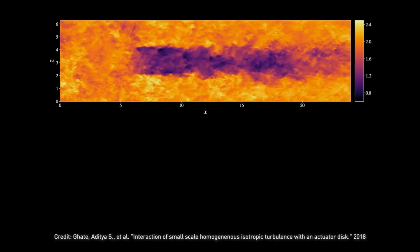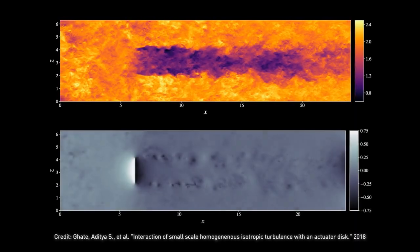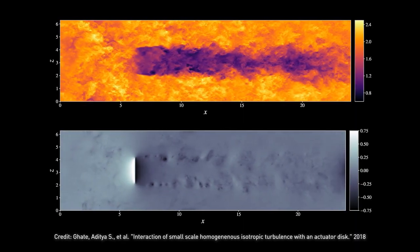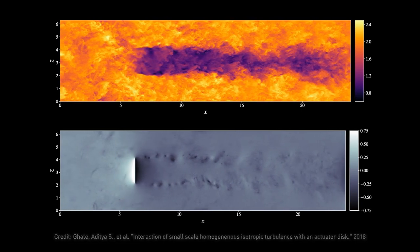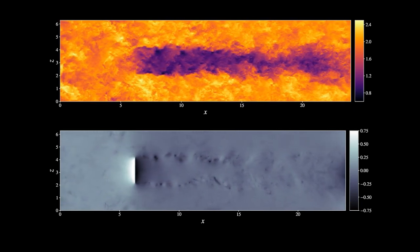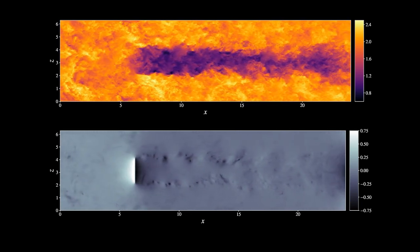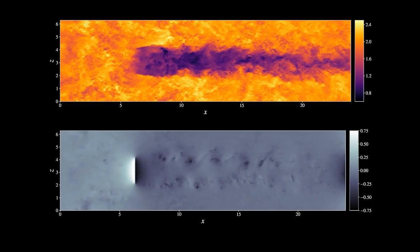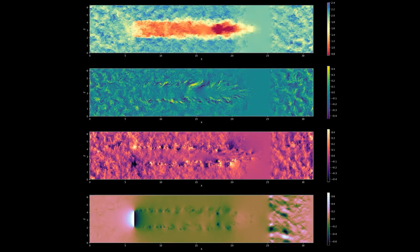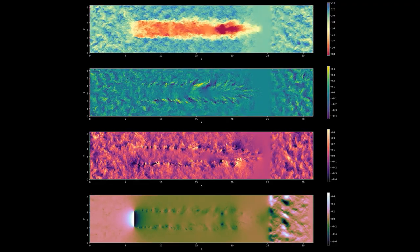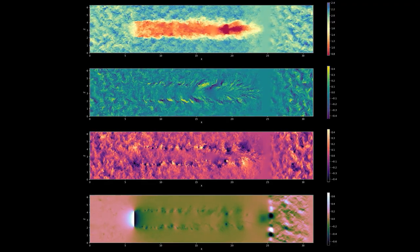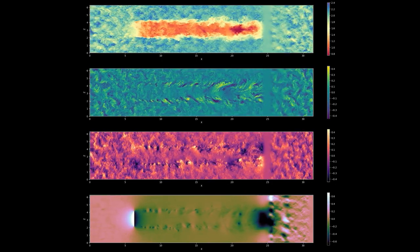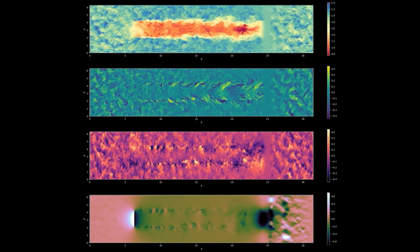The gold standard for generating this data is the large eddy simulation, shown here. But to run just one iteration for a single turbine can take 40 days on a 100-core CPU. And with so many iterations needed to develop an accurate model for a specific site, using CPUs is impractical.